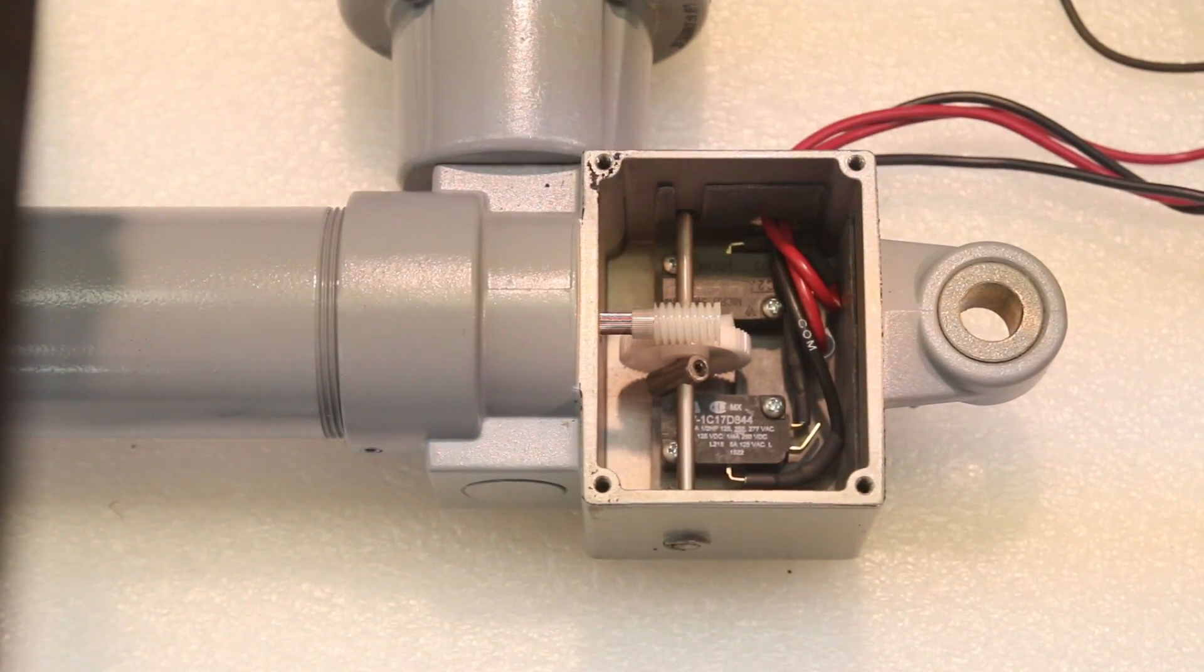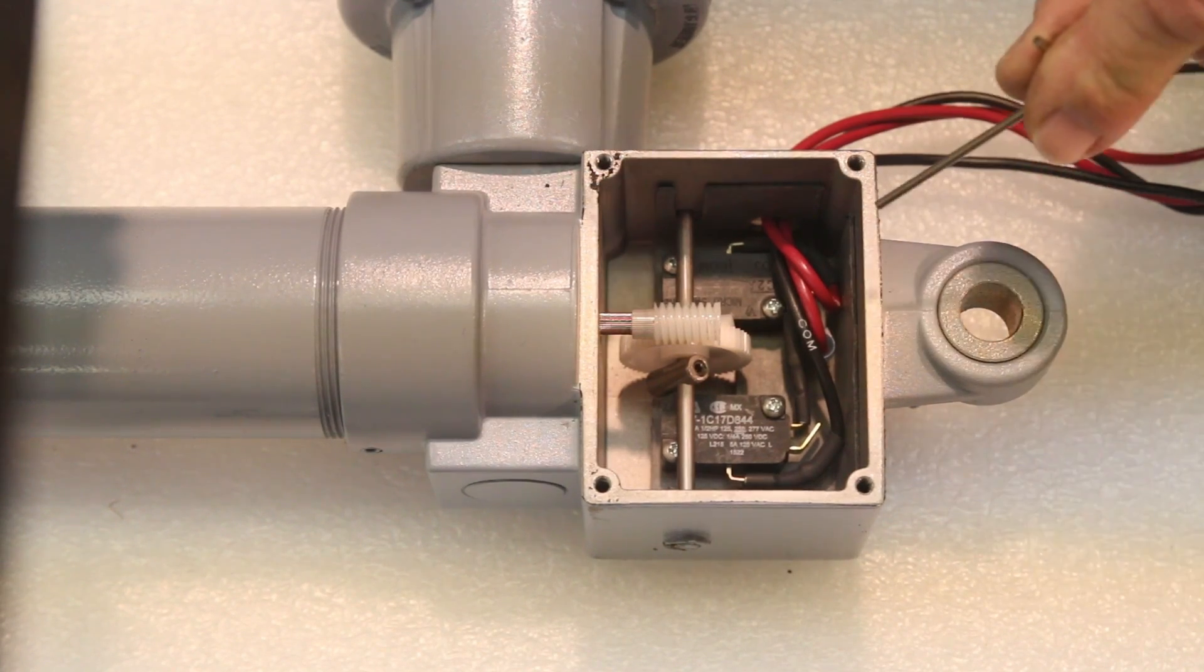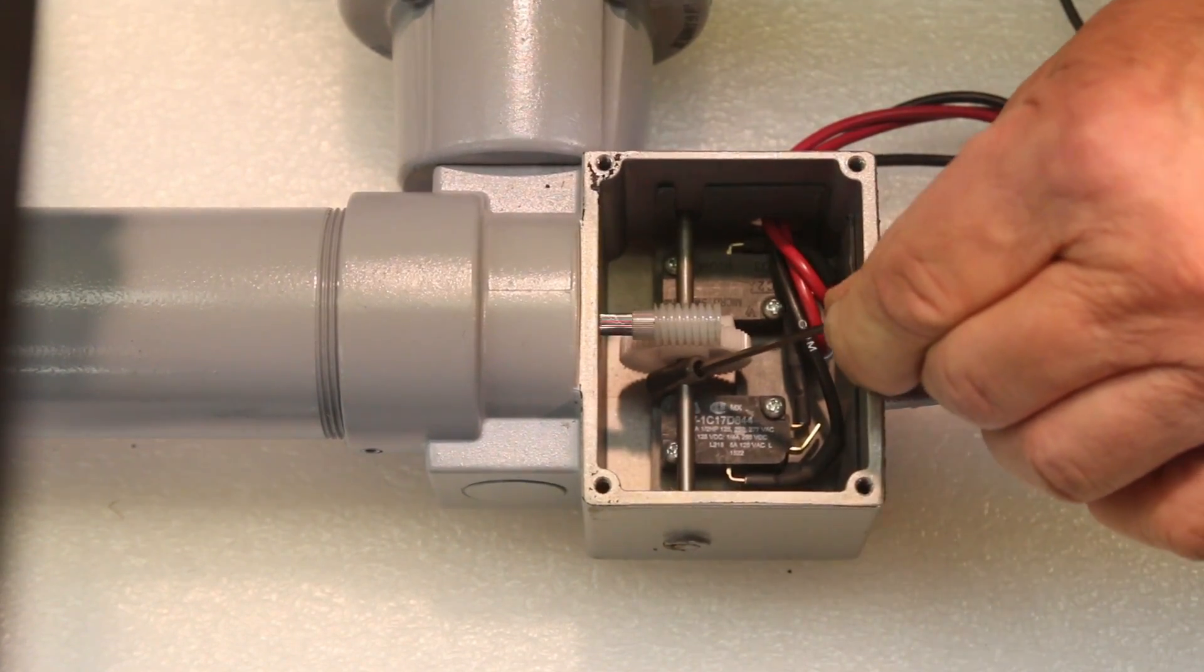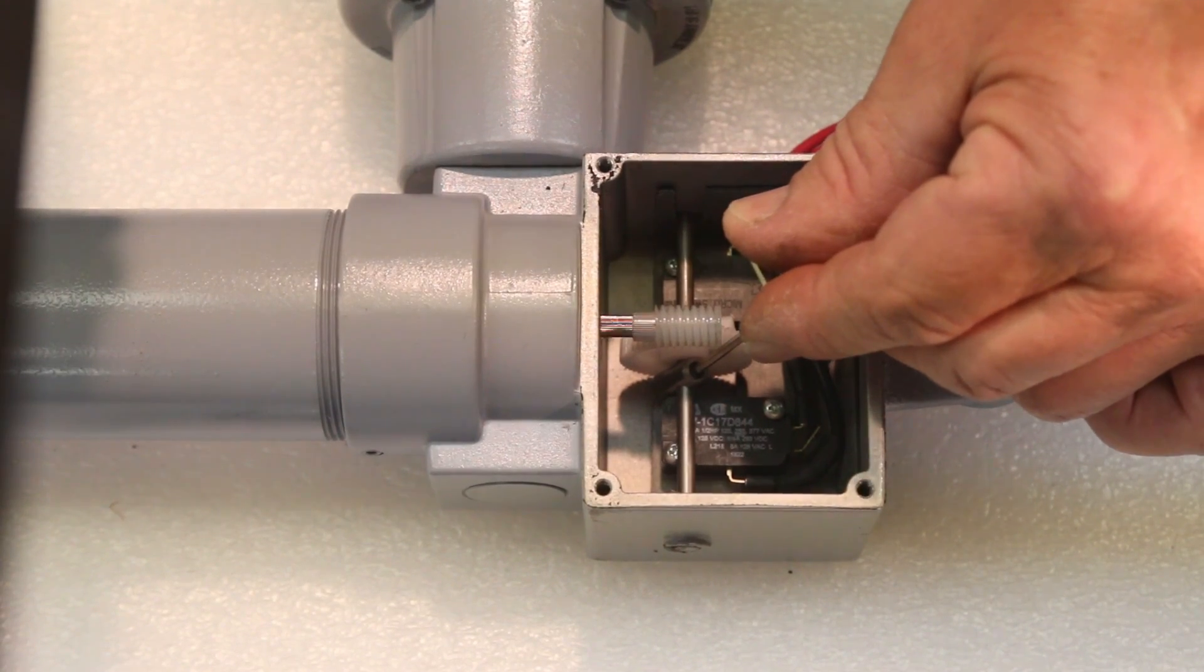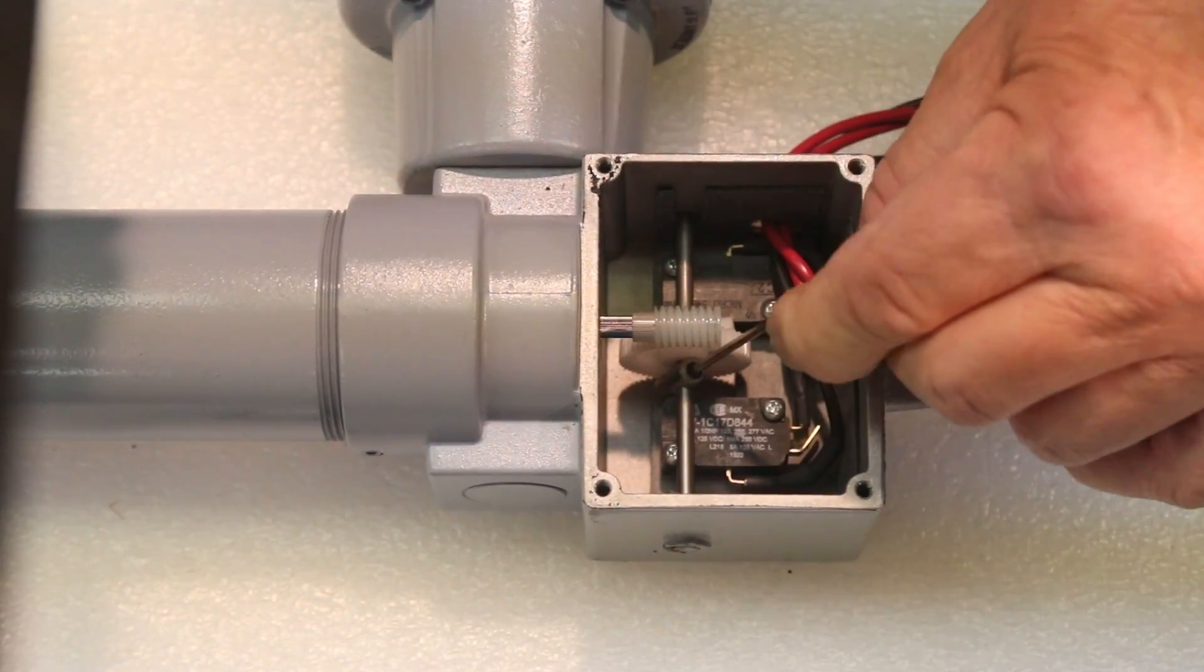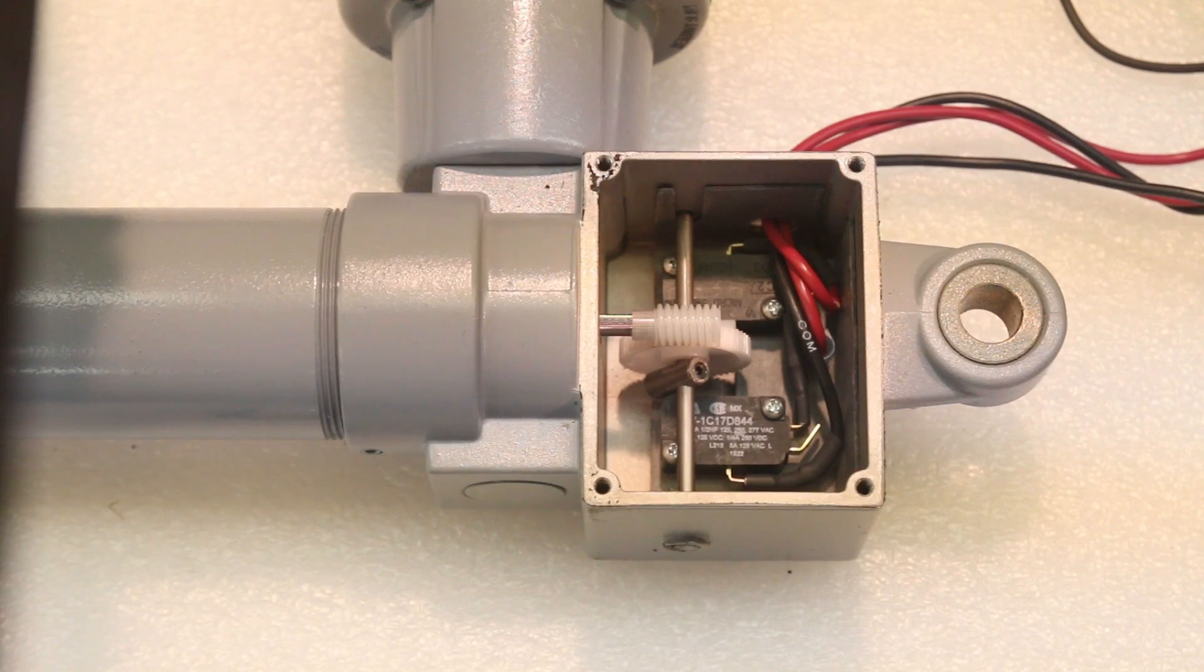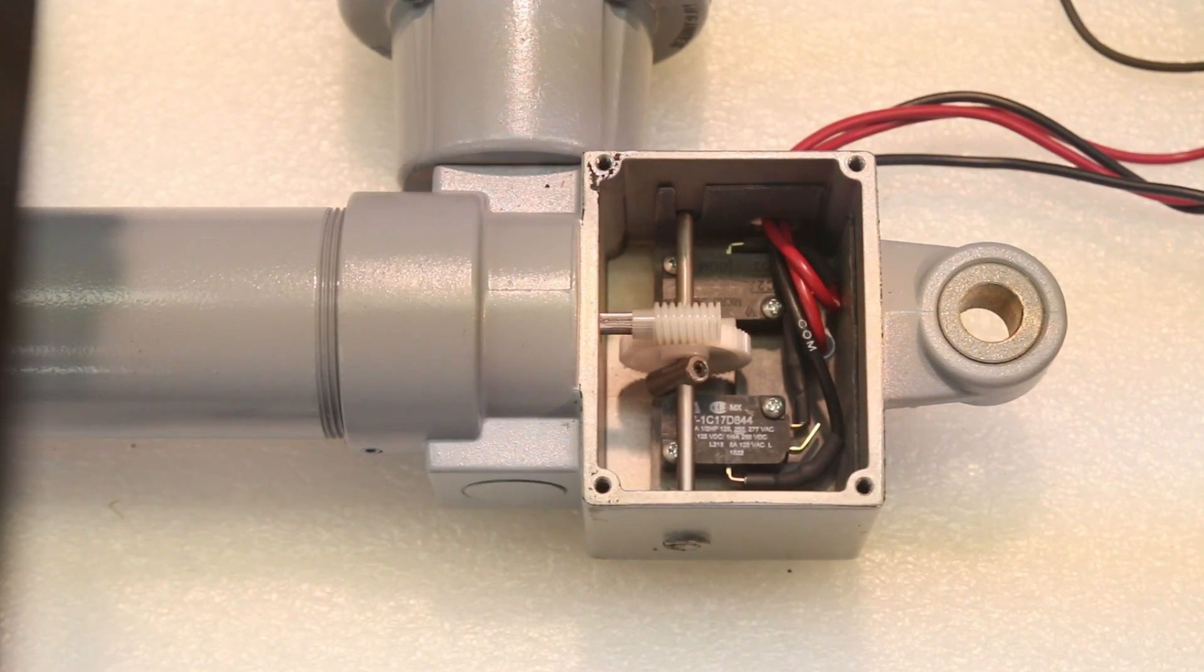Once we have achieved the extended height, we will adjust the steel adjustable cam until we actuate the extend limit switch. This is done by using the allen wrench for a lever. We hit the switch, and we tighten the set screw. This then prevents the actuator from running in the extend direction. It will run in the retract direction, and then back to the extend direction until the switch is actuated.